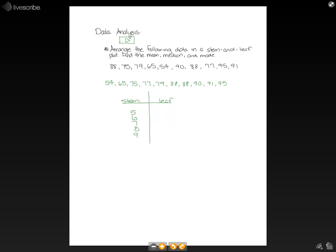To find the leaves, we just go and find the ones' digits that correspond with our stems. For our 5, it's 54. For our 6, it's 65. For our 7, it's 75, 77, and 79. For our 8s, it's 88 twice. Make sure you write it twice because we have to take into account every single number that we're given. For our 9s, we have 90, 91, and 95.